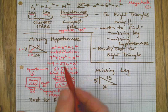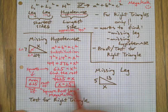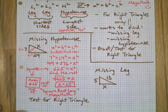Substitute, add, find the root, done. Here's another thing you can do with the Pythagorean Theorem. We can find a missing leg.